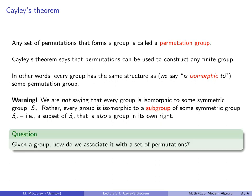Here's a question for you. Given a group, how do we associate it with a set of permutations? Well, I'm going to show you two ways. One using the Cayley diagram and another using the multiplication table.